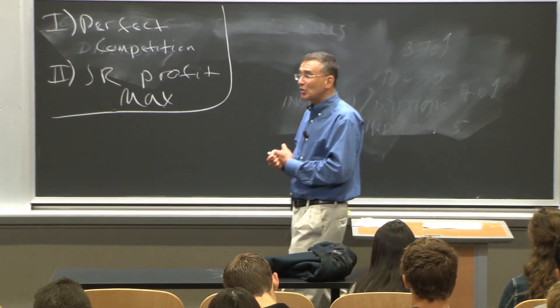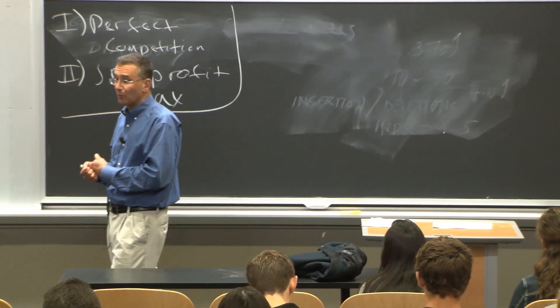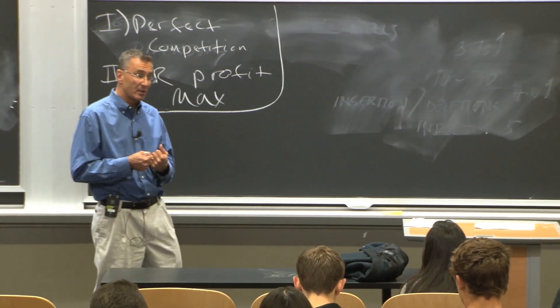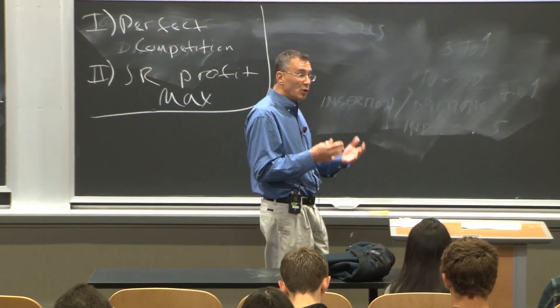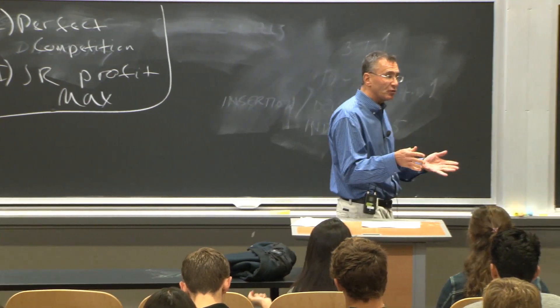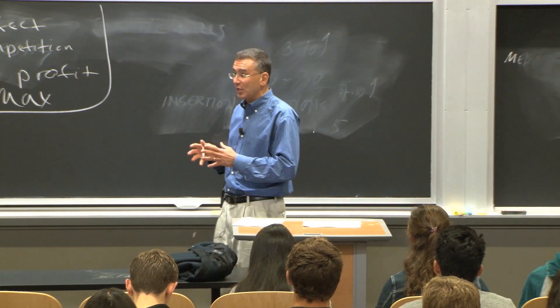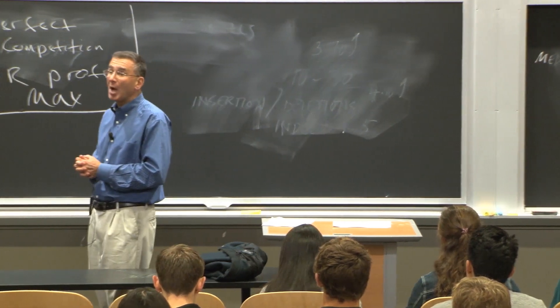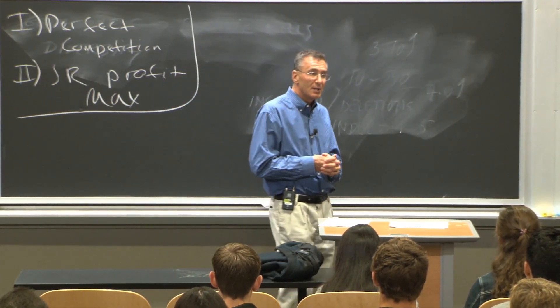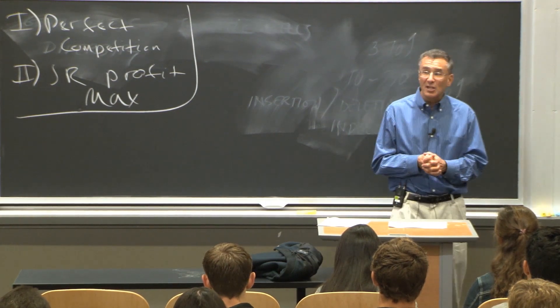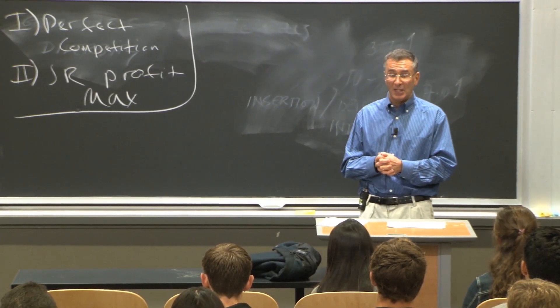And to do that, we add the extra step with producer theory that wouldn't have a consumer theory, which is we bring in the market. And what we're going to do over the next series of four or five lectures is talk about how we bring in the market to help pin down the final condition, to help pin down the quantity the firm actually produces. And the reason this is complicated is because markets can operate very differently.